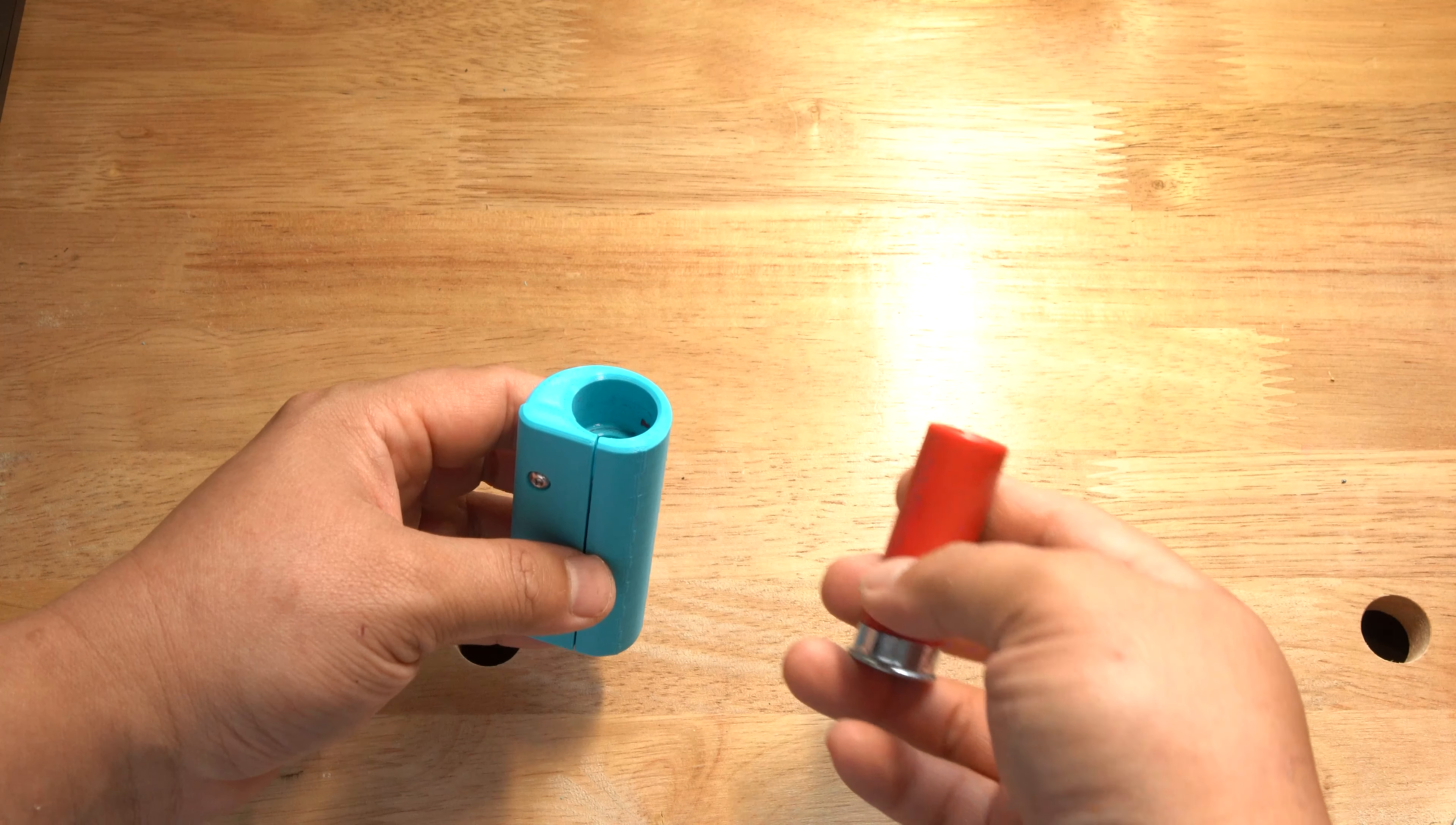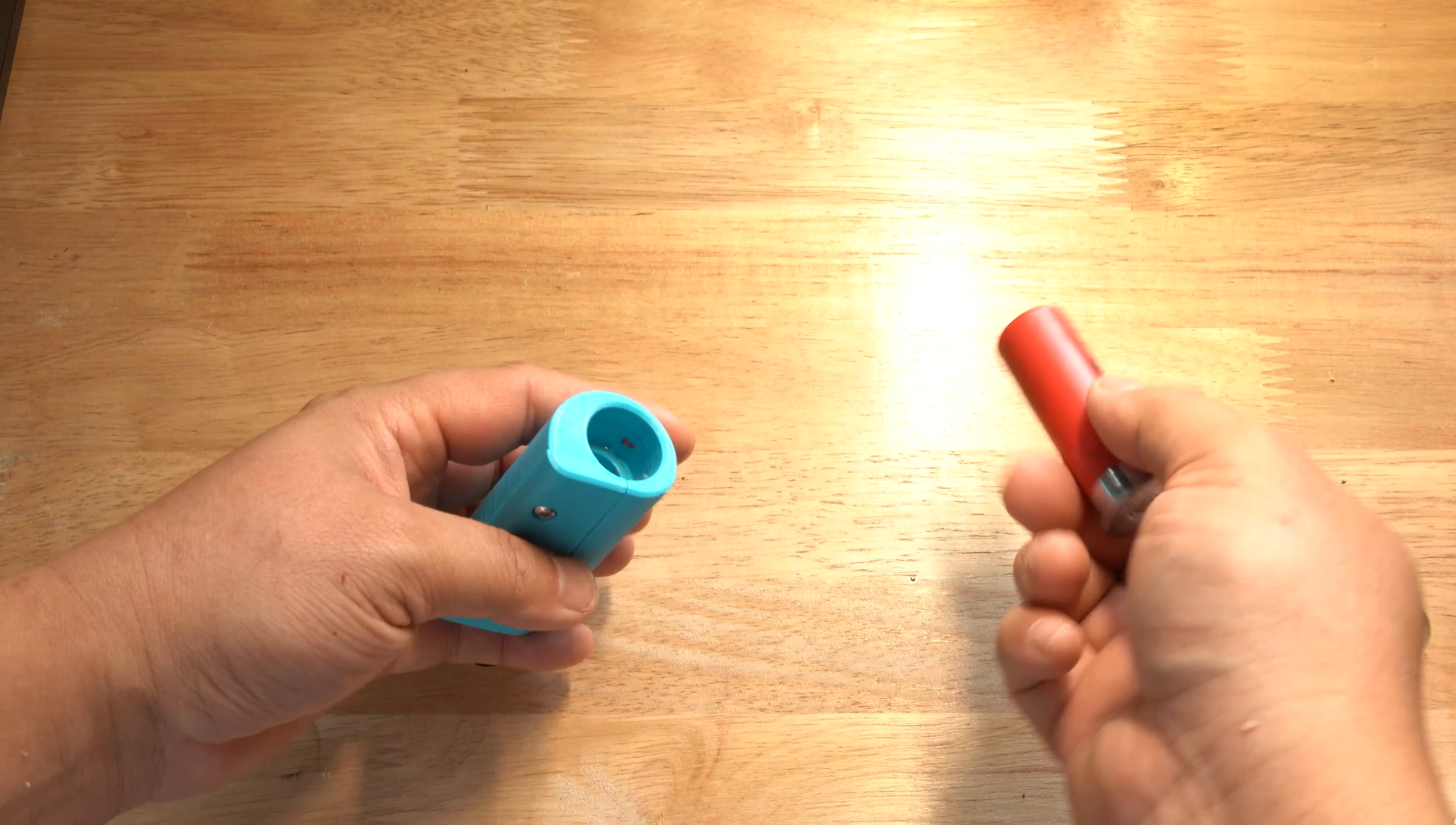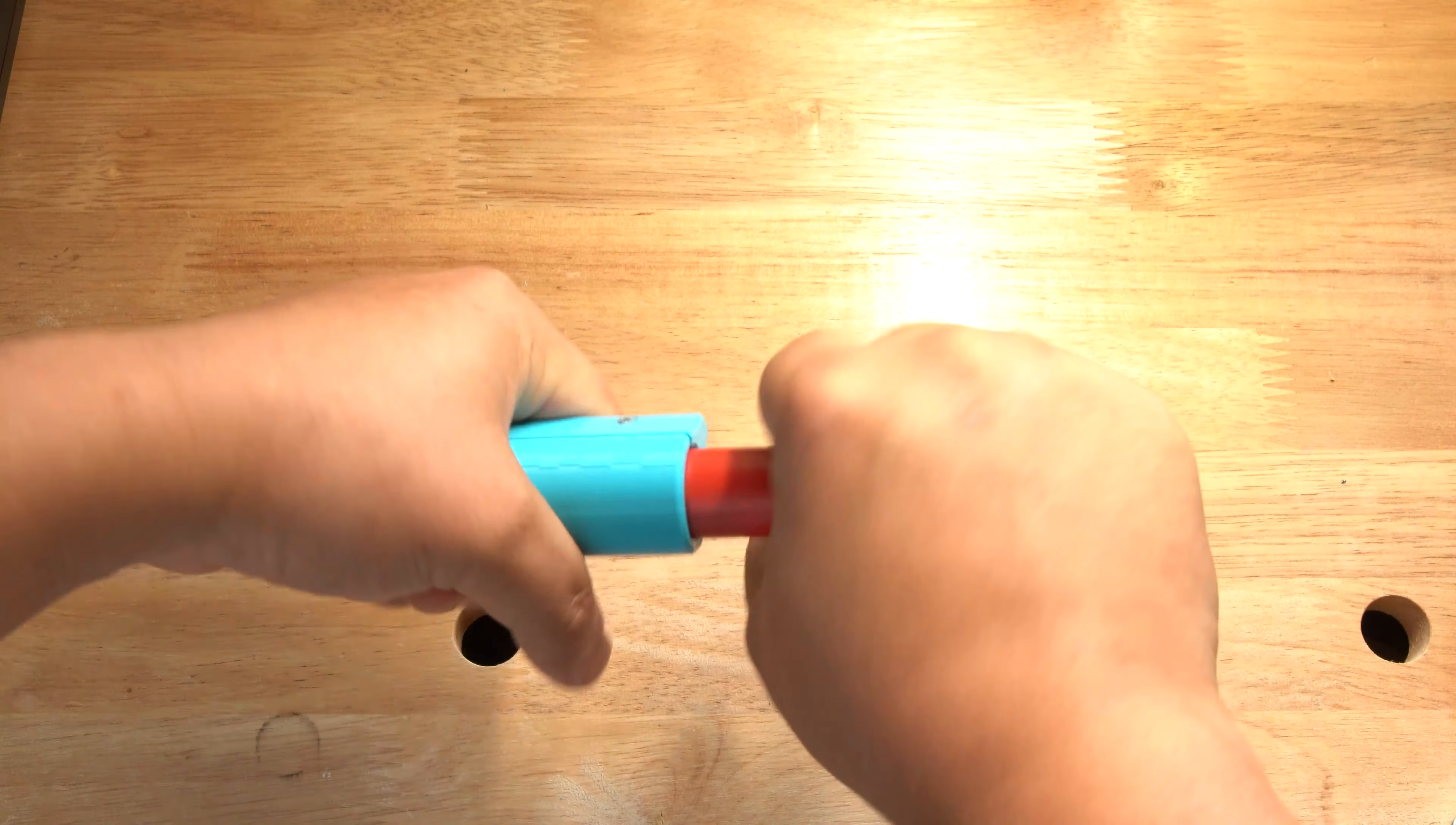It uses a replaceable box cutter blade and to use it just insert the shell, light pressure in the beginning until you feel it catch.